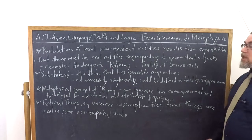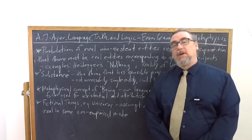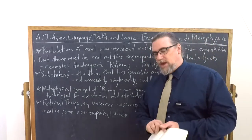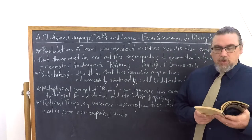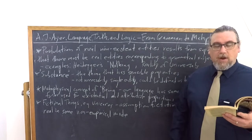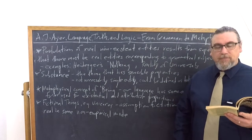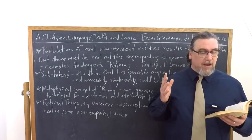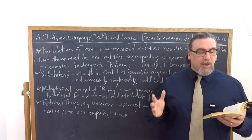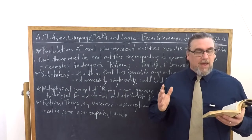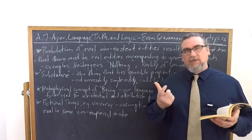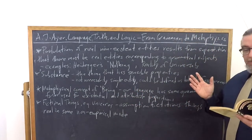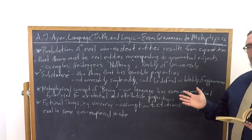The last one that he talks about is fictional things. And he uses the example of unicorns. So, when we say things like dogs are faithful and unicorns are fictitious, we're, again, being misled by grammar. We're thinking that, he says, there's an assumption that these are of the same logical type. So, when we say that things are fictitious, like unicorns, we are asserting that they have this property of being fictitious.